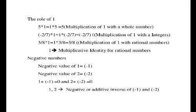Next, the role of 1. See: 5 into 1 equals 1 into 5 — this is multiplication of 1 with whole numbers. Another example: minus 2 by 7 into 1 equals 1 into minus 2 by 7, which equals minus 2 by 7. Also, 3 by 8 into 1 equals 1 into 3 by 8, which equals 3 by 8. From these examples, 1 is the multiplicative identity for rational numbers.